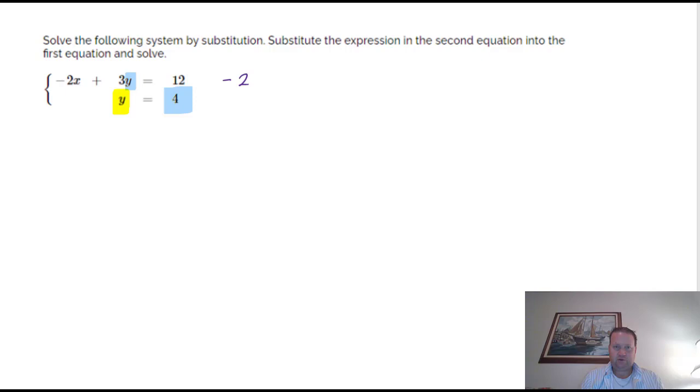So I'm going to copy the top equation. It's just negative 2x plus 3y, but then 3y becomes 3 times 4 because we just substituted the 4 in for the y. And that equals 12.